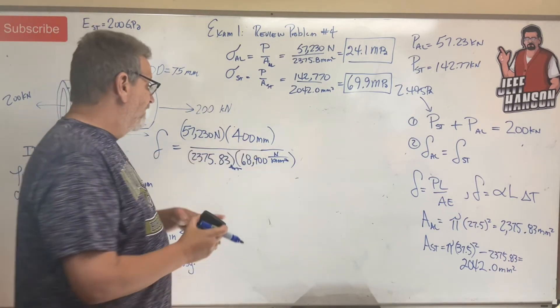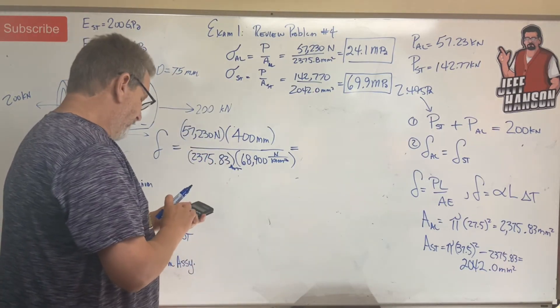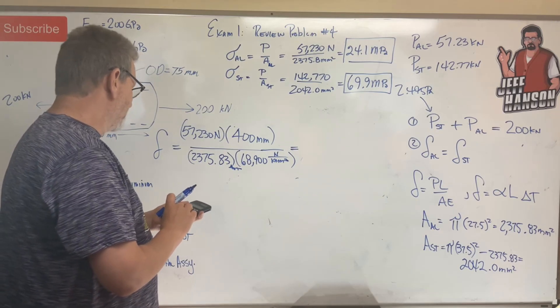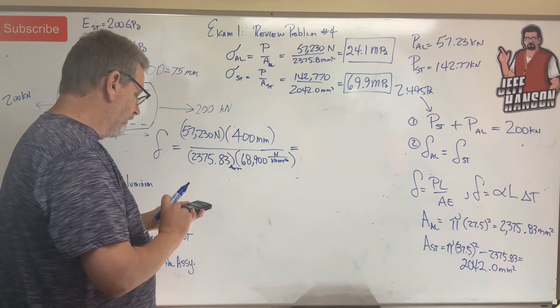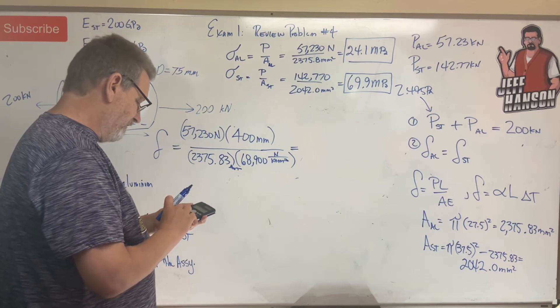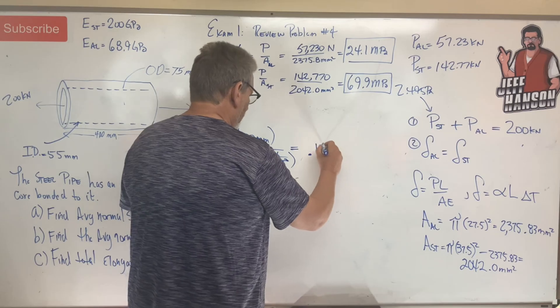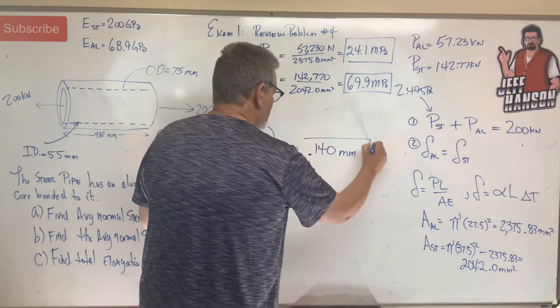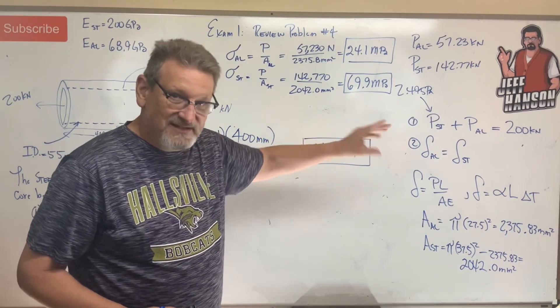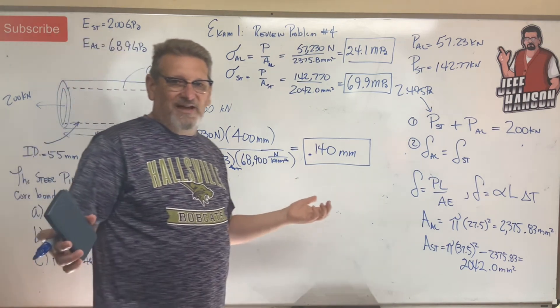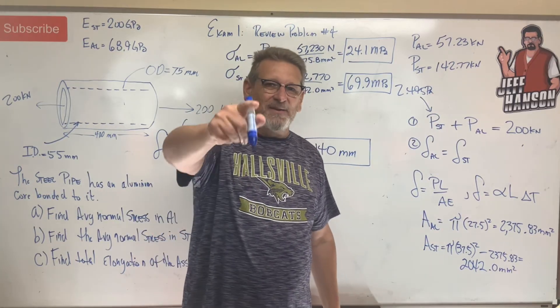That's what I want, right? So the total elongation of the aluminum, which is equal to the steel, is 57,230 times 400 divided by 2375.8 divided by 68,900 equals 0.140 millimeters. That's the total elongation of the assembly. When I get done, remember I did the aluminum. If I would have done the steel on the other side, I should get the exact same number, shouldn't I? All right, what do you think? Axial elongation with a little bit of compatibility equations. You got it, man. I hope you make 100, send me an email, tell me you made 100 on this test. Let's go.